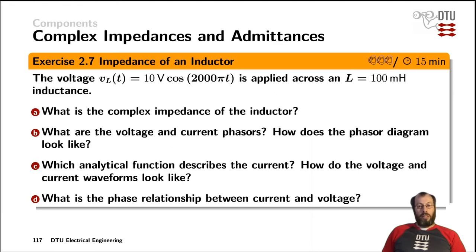To round off the introduction of inductors and capacitors, there is an exercise for an inductor here and an exercise for a capacitor on the next slide. In this one, the voltage across an inductor is given and the size of the inductance is 100 millihenry. What is the complex impedance of that inductor?